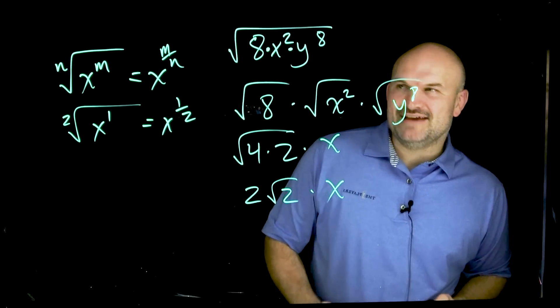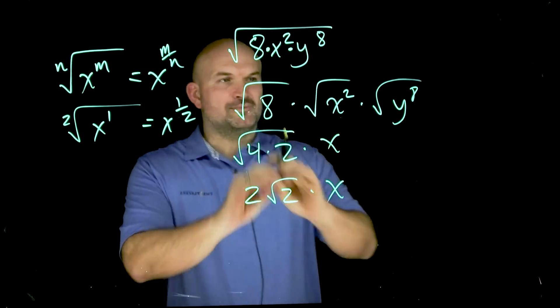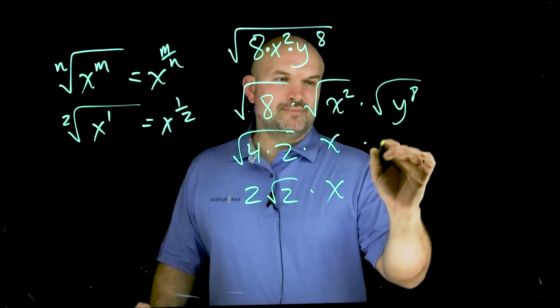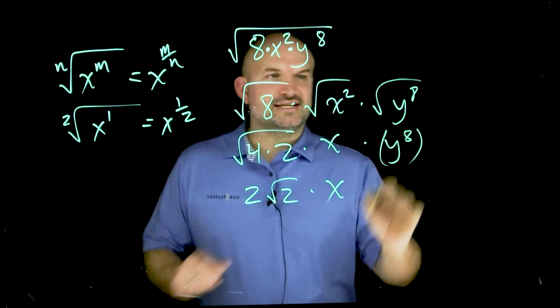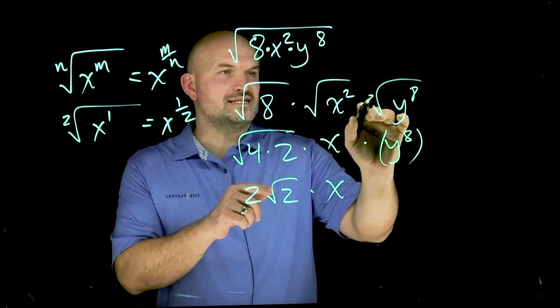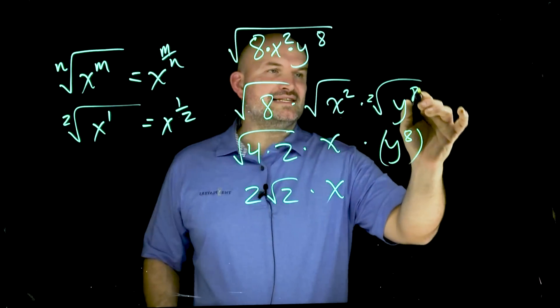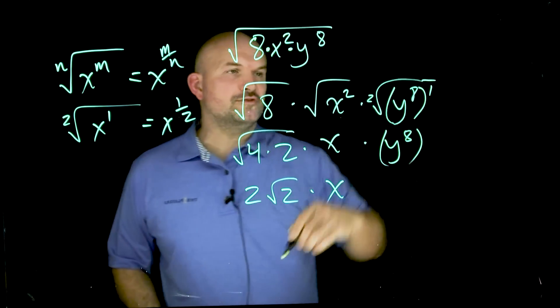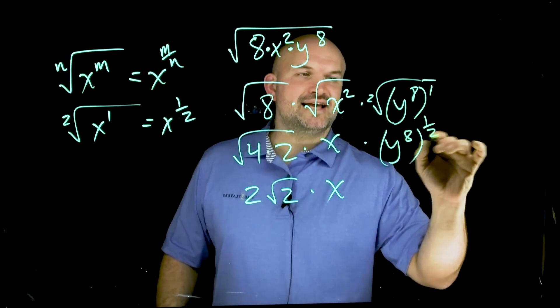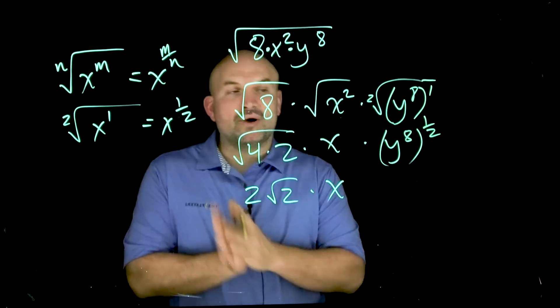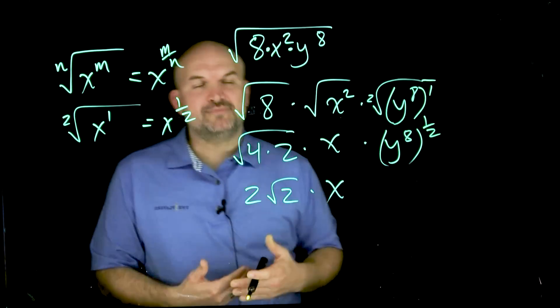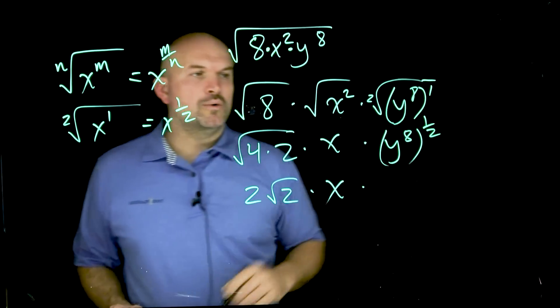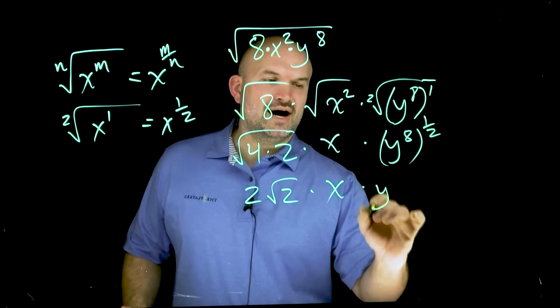However, for y to the eighth, if I don't want to go through this process of breaking them down and trying to identify how to simplify that, if I just go ahead and rewrite this as a rational power, it would look something like this. Again, this is going to be my index or the square root of y to the eighth. You could think about that as being raised to the first power, y to the eighth raised to the first power. So therefore I can rewrite y to the eighth as a one half. Now apply my product rules of exponents. Whenever you have an exponent raised to another power, you're just going to simply multiply those powers. So 8 times one half is going to be y to the fourth.